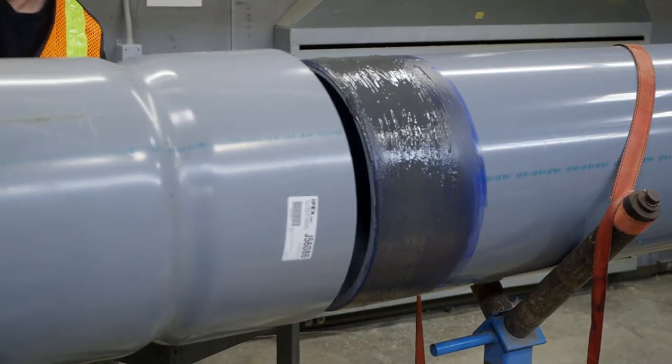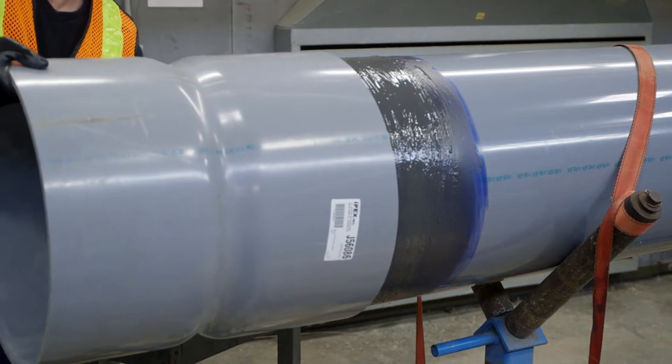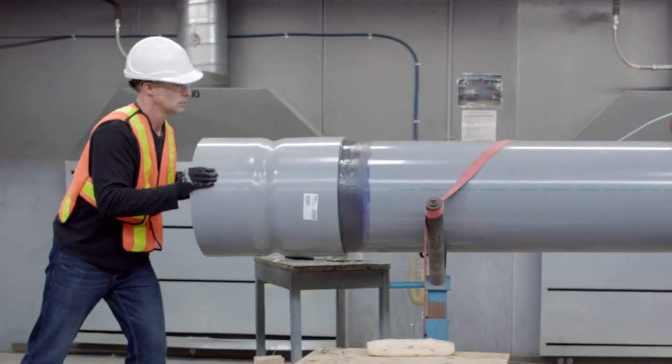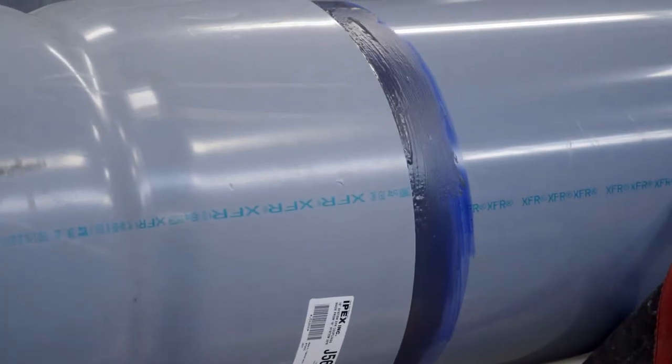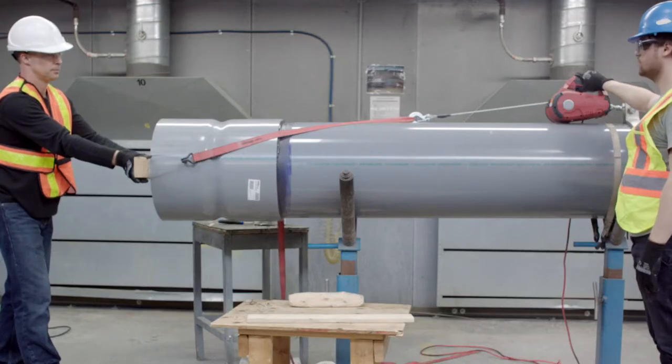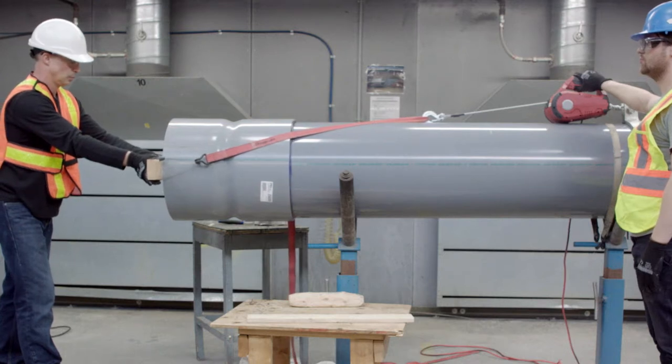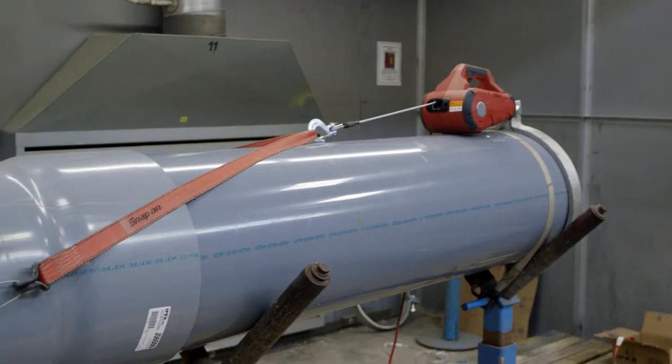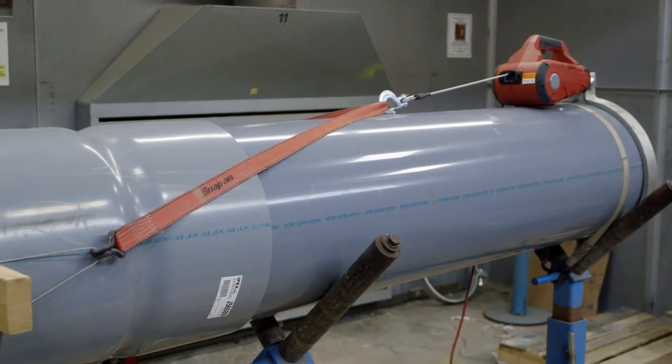Without delay, while the solvent cement is still wet, assemble the pipe end fitting. If possible, twist an eighth to a quarter turn as the pipe is being inserted. Once the pipe has reached the fitting socket stop, do not turn any further. Doing so could break any fusion that is starting to occur.